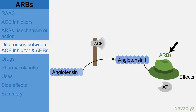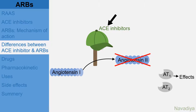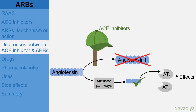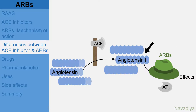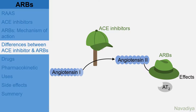The next difference is that ARBs produce more complete inhibition of angiotensin 2 activity. That is because ACE inhibitors inhibit only ACE, so there will be some angiotensin 2 synthesized by alternate pathways, which will act on angiotensin receptors and produce some effects. ARBs act directly on receptors, so the effect of all angiotensin 2 is blocked. Another difference is that with ARBs, more angiotensin 2 is synthesized as feedback. As the AT1 receptor is already blocked, this angiotensin 2 now acts on AT2 receptors.